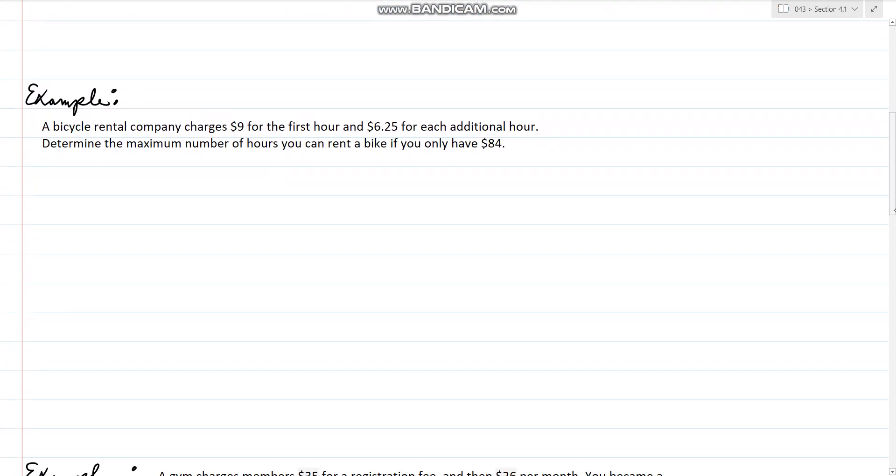In the next example, we have a bicycle rental company charging $9 for the first hour and $6.25 for each additional hour. We want to determine the maximum hours you can rent a bike if we only have $84. The y-intercept is 9 and the slope is $6.25. That means y equals mx plus b can become $84 equals 6.25t plus 9.